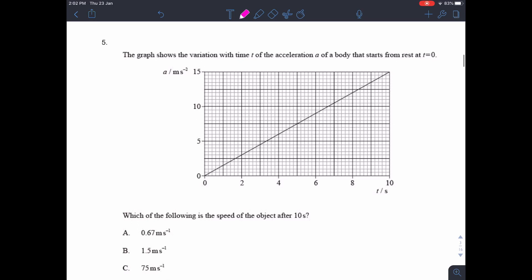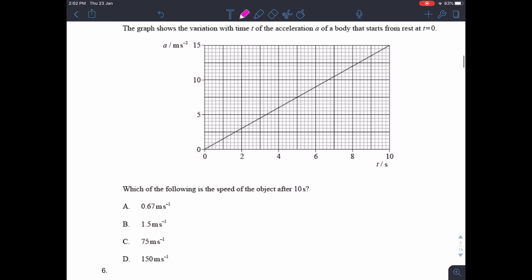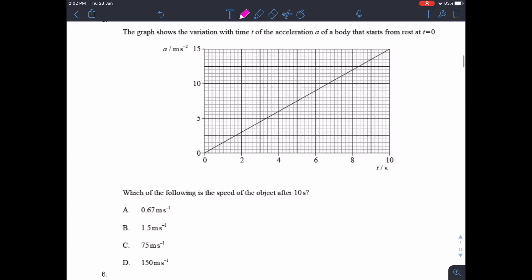Question 5. An acceleration and time graph. Which of the following is the speed of the object? Well, this is a reasonably easy one because the speed of an object from an acceleration time graph is just the area under the curve, or area under the line. So in this case, that's half the base times the height, which is 5 times 15, which is 75 meters per second.